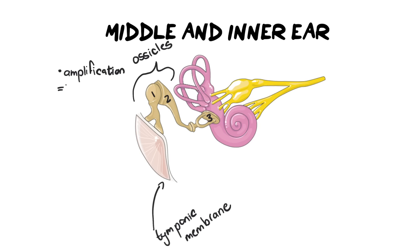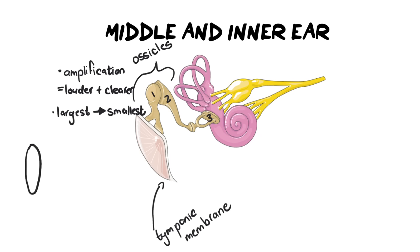Amplification is making sounds louder and also clearer. The bones are ordered from largest to smallest, which allows us to amplify the sound. The tympanic membrane has a really large surface area, and we go from there into a smaller bone, then a smaller bone, and then the smallest bone. That transition from a large surface to a tiny bone at the end — that is amplification. I have a detailed explanation of amplification in my cheat sheet and study guide.